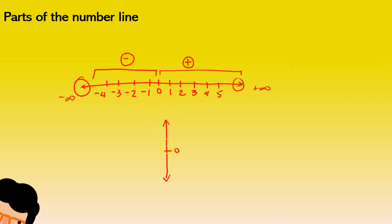In the vertical line, the logic stays the same. So above zero we have one, two, three, and so on. And then down we have minus one, minus two, minus three, and so on.